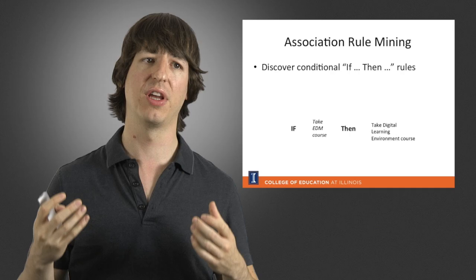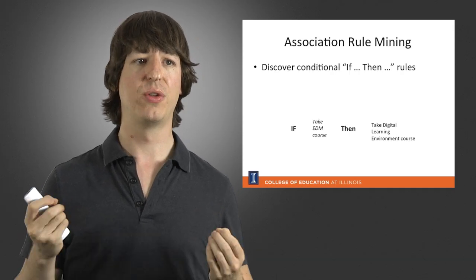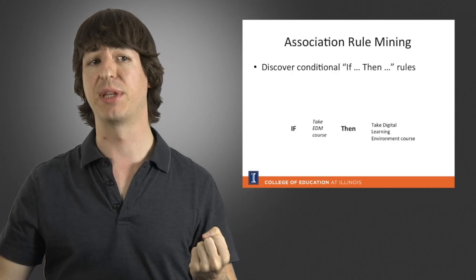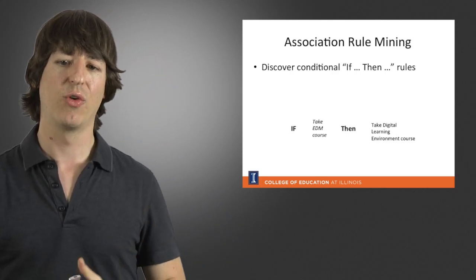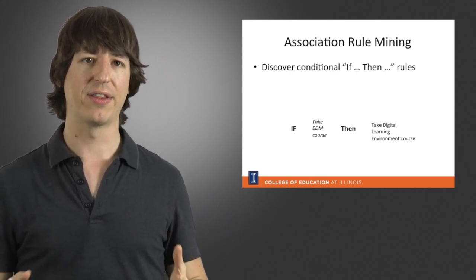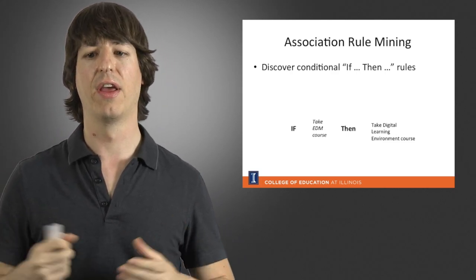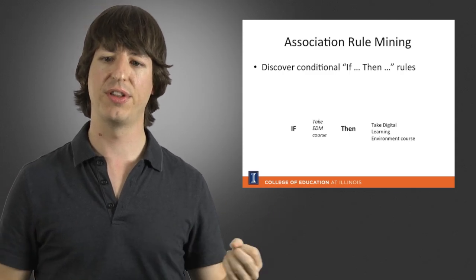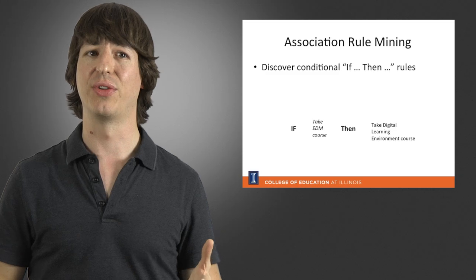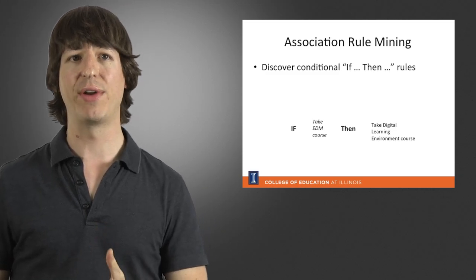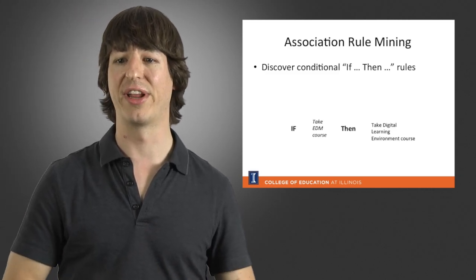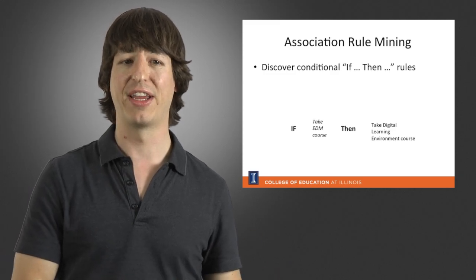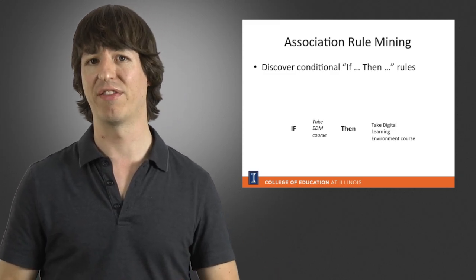For example, we might use association rule mining to discover conditional rules of the form 'if something, then something else.' We might look at the courses a student takes and identify using association rule mining that if a student takes a class on educational data mining, then they're also very likely to take a class on digital learning environments — which makes sense because educational data mining can be easily applied to digital learning environments.